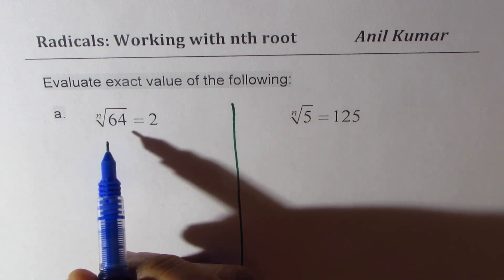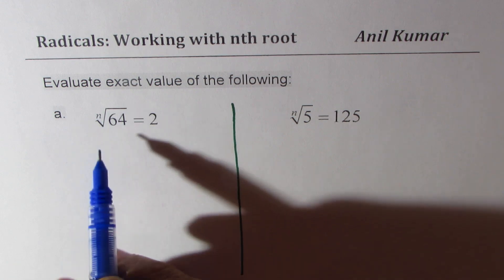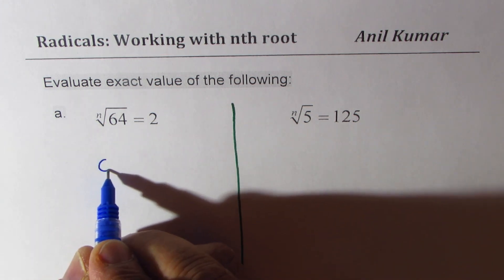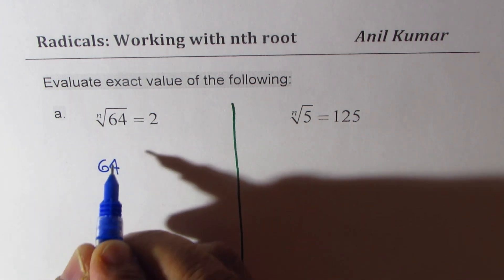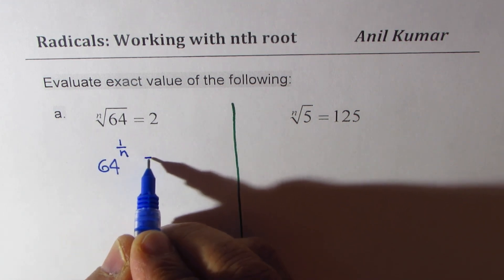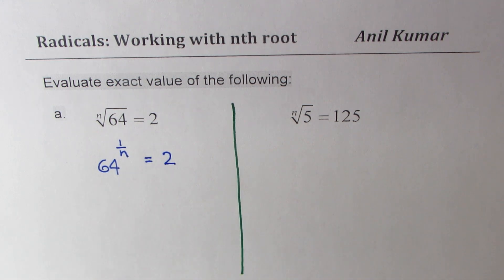So whenever I write, let's take the first, 64 to the nth root, it really means that this index n could be treated as 64 to the power of 1 over n. So that is what it translates to, equals 2. So that is how we see our equation.